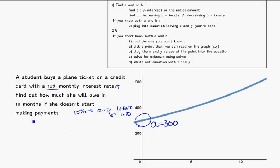So she buys a $300 plane ticket with 10% monthly interest on her credit card. Let's write out the equation. This is the case where I know a is 300 and b is 1.10, so y equals 300 times 1.10 to the power of x. I'm done. I already know my equation from a and b. If you know both of them, you just put it straight into the equation and you're done.